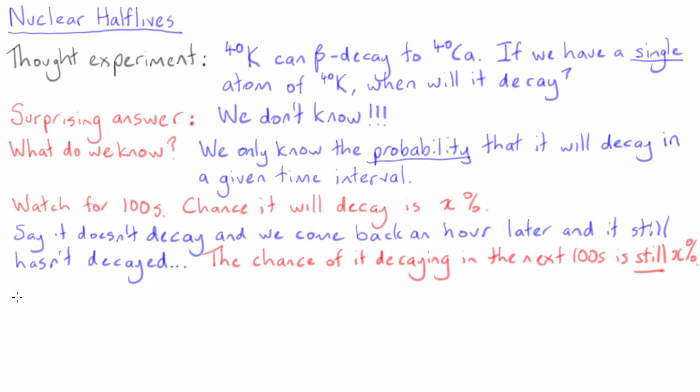This might seem really weird the first time you think about it, but the fact is that the past history of the atom is irrelevant. In any new observations of a potassium-40 atom, the probability of decay per unit time is constant and unchanging.